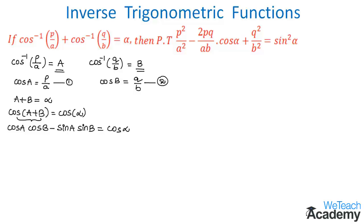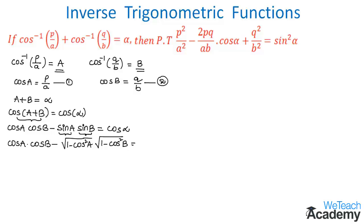This equation is in terms of cos and sin, so let us change sin A and sin B in terms of cos. The equation becomes: cos A · cos B − √(1 − cos²A) · √(1 − cos²B) = cos α. The whole equation is now expressed in terms of cos.